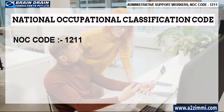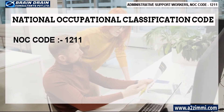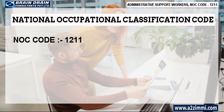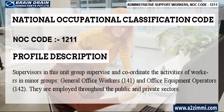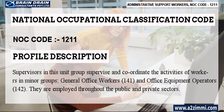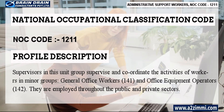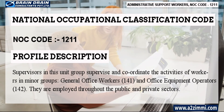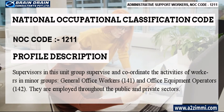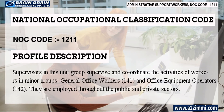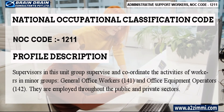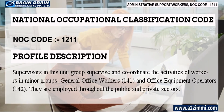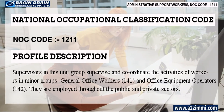The National Occupational Classification Code or NOC code for the profile of supervisors, general office, and administrative support workers is 1211. As per Statistics Canada, supervisors in this unit group supervise and coordinate the activities of workers in minor groups — general office workers 141 and office equipment operators 142. They are employed throughout the public and private sectors.